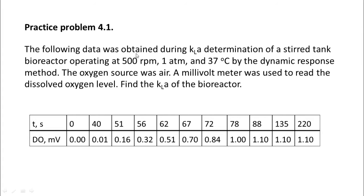The problem reads: the following data was obtained during KLA determination of a stirred tank bioreactor operating at 500 rpm, 1 atmosphere and 37 degrees C by the dynamic response method. The oxygen source was air, a millivolt meter was used to read the dissolved oxygen level. Find the KLA of the bioreactor. What is given here is time and dissolved oxygen in millivolts.